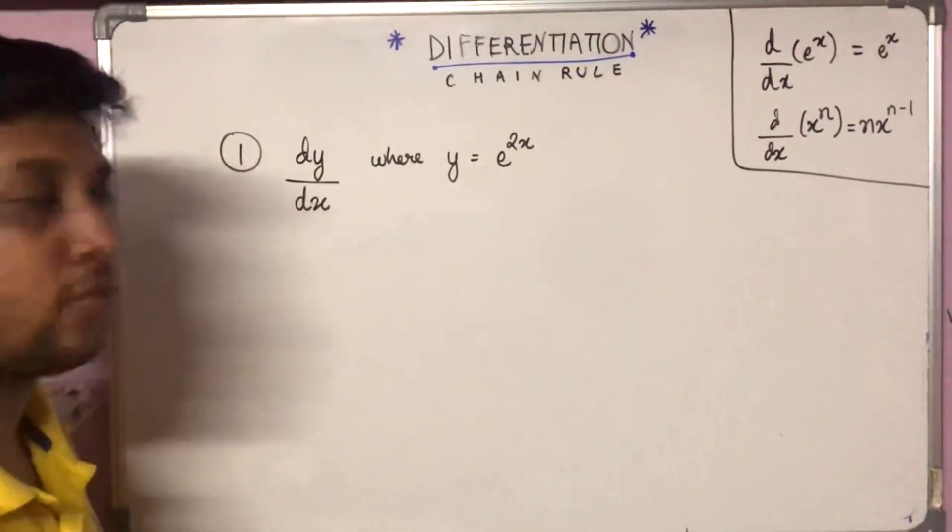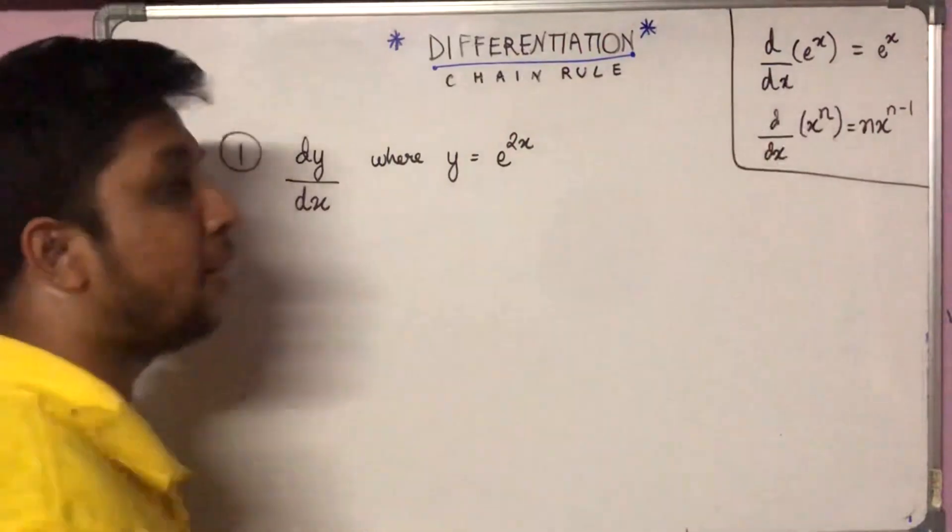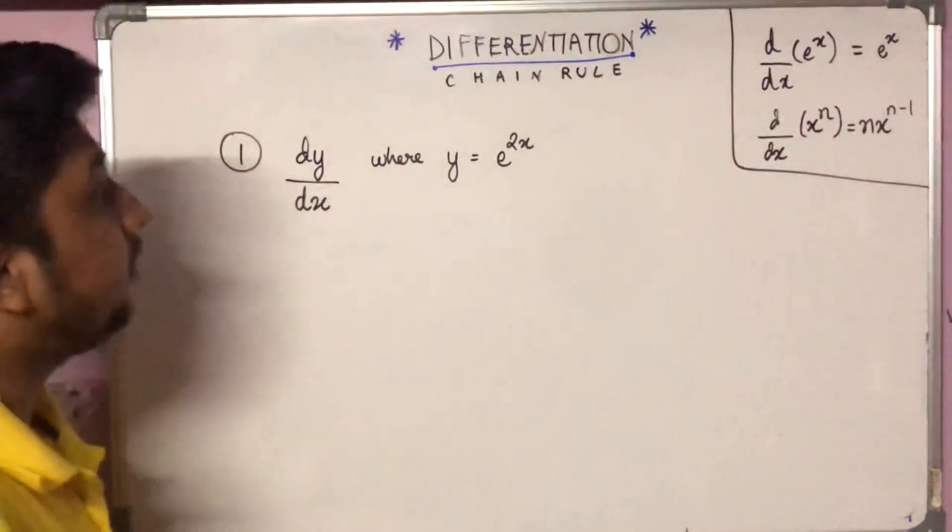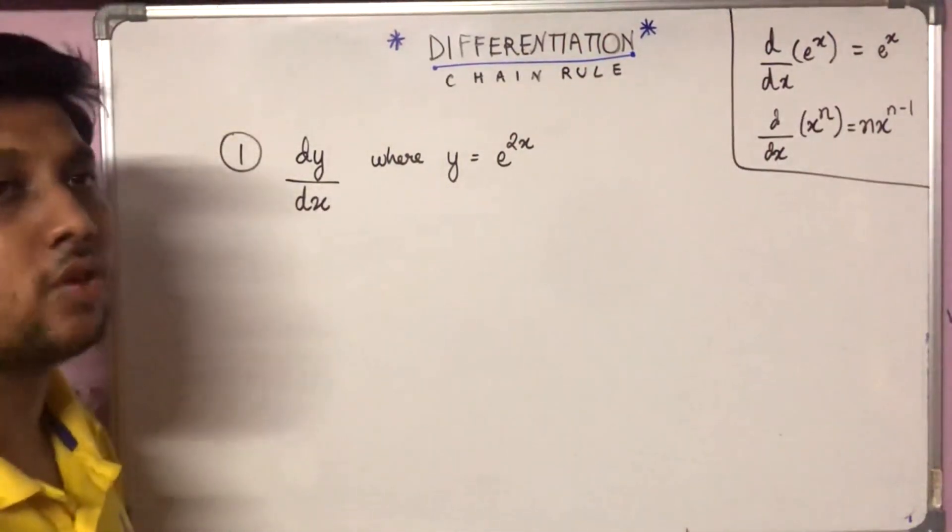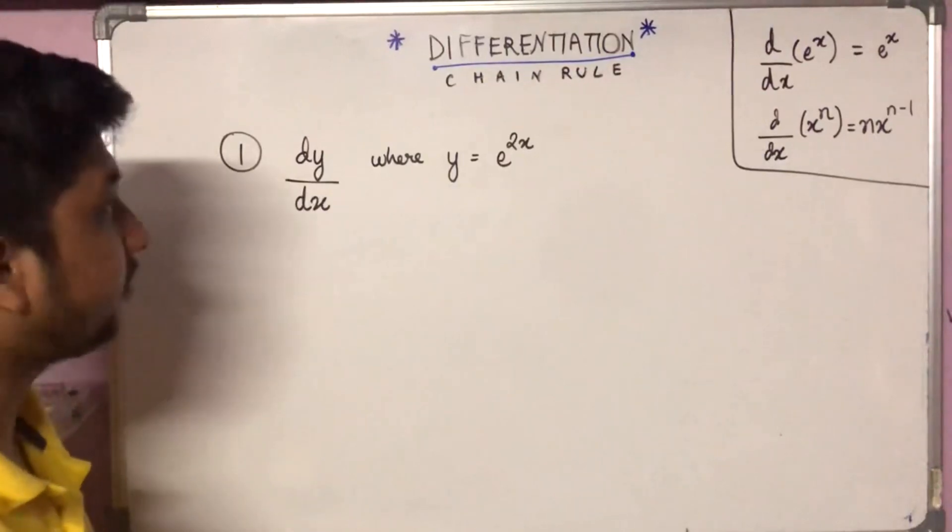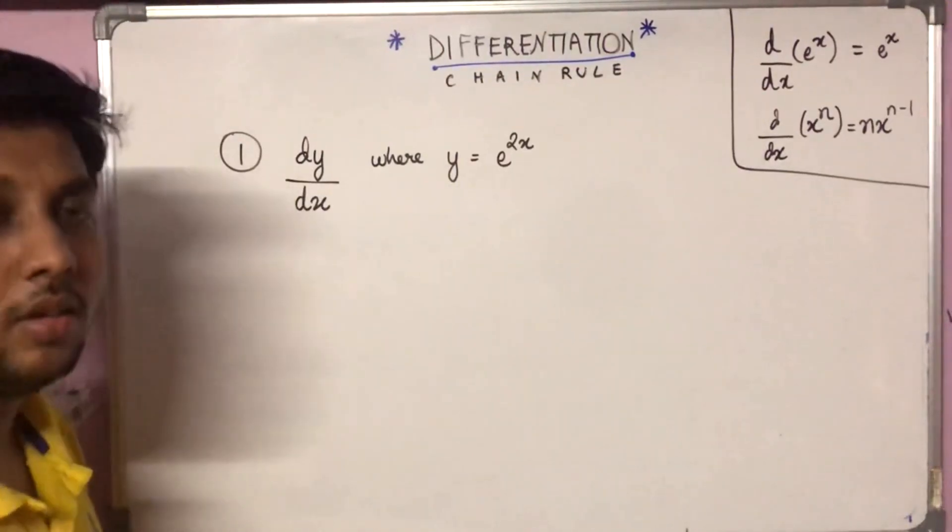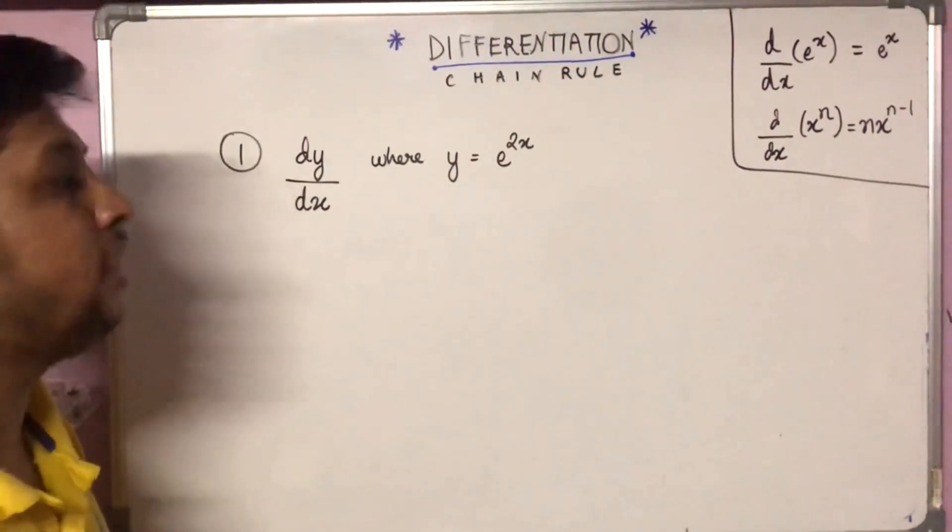If it would have been e^x, then d/dx of e^x would be e^x—we would have no problem. But we want to find d/dx of e^(2x), and we can proceed.